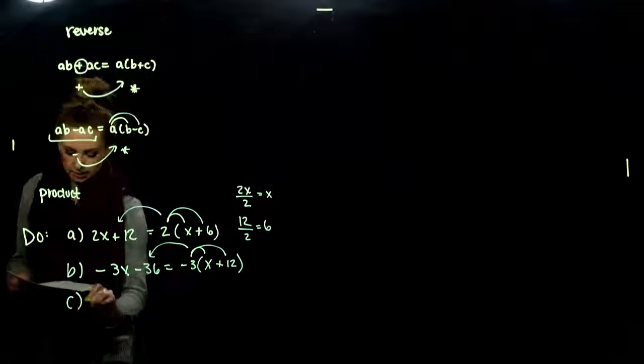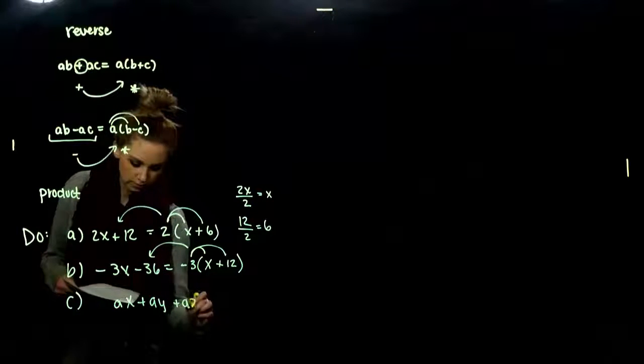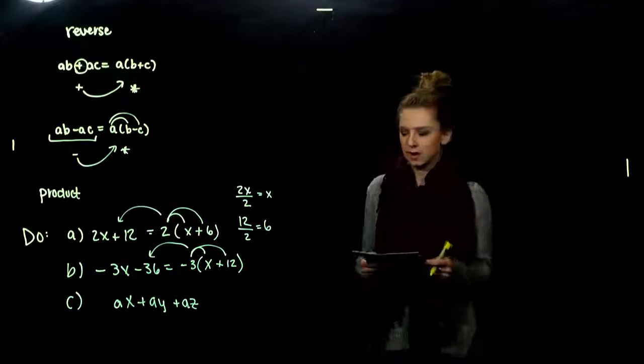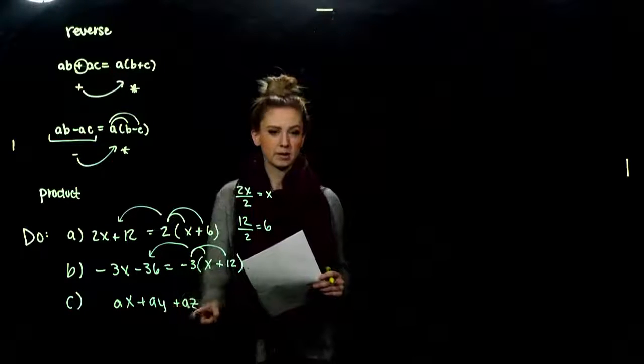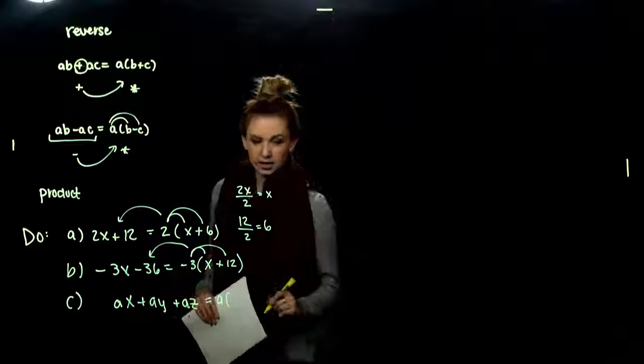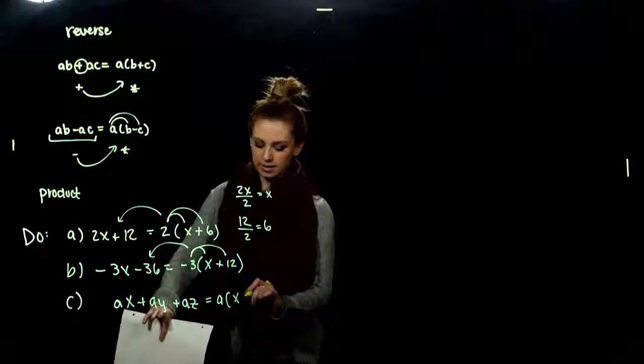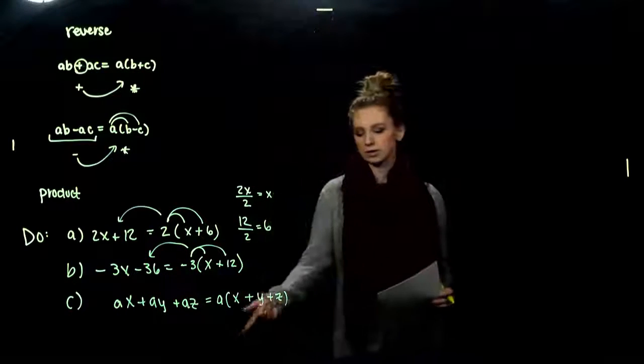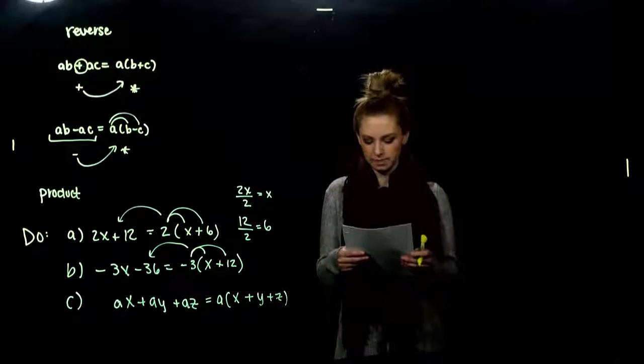What about for part b? What do these two share in common that we can factor out of both? A factor of three, and what else could we do? They both share a negative. If I could make things positive and look nicer, I'm going to go ahead and do that. So let's take out a factor of negative three. If I take negative three out of negative three x, what are we left with? X. And negative three out of negative thirty-six will be left with positive twelve. And again, we can check, if I distribute negative three back in, do I get to my original? Yeah, we do.